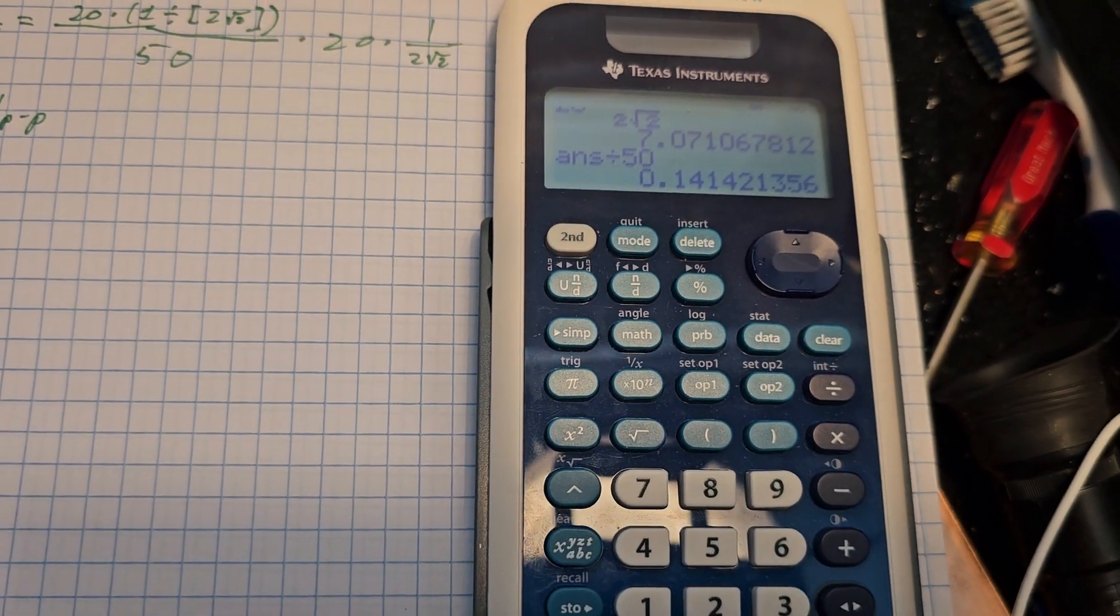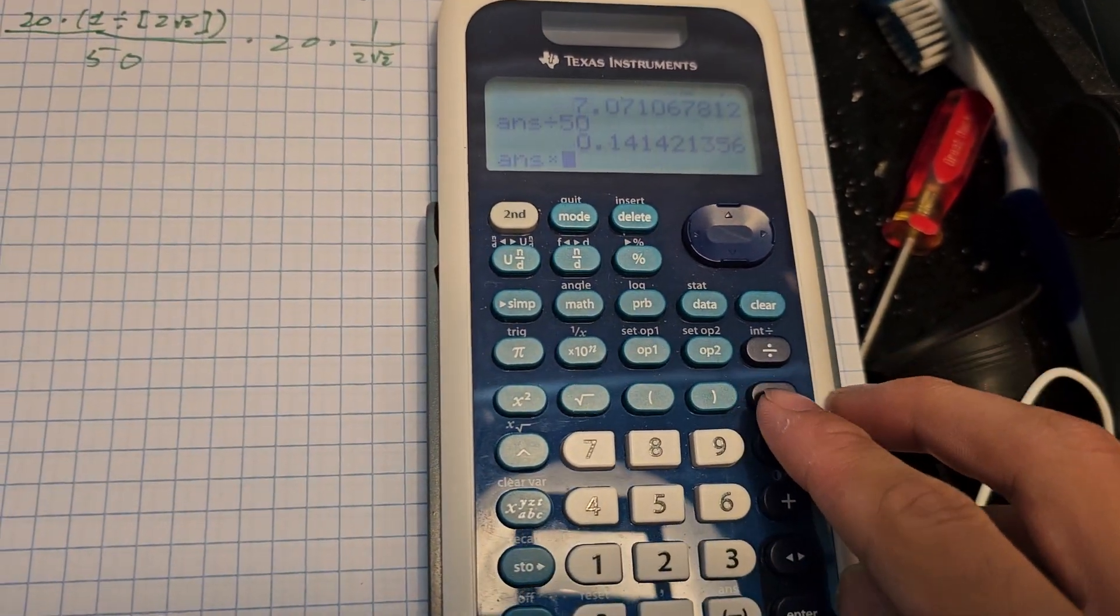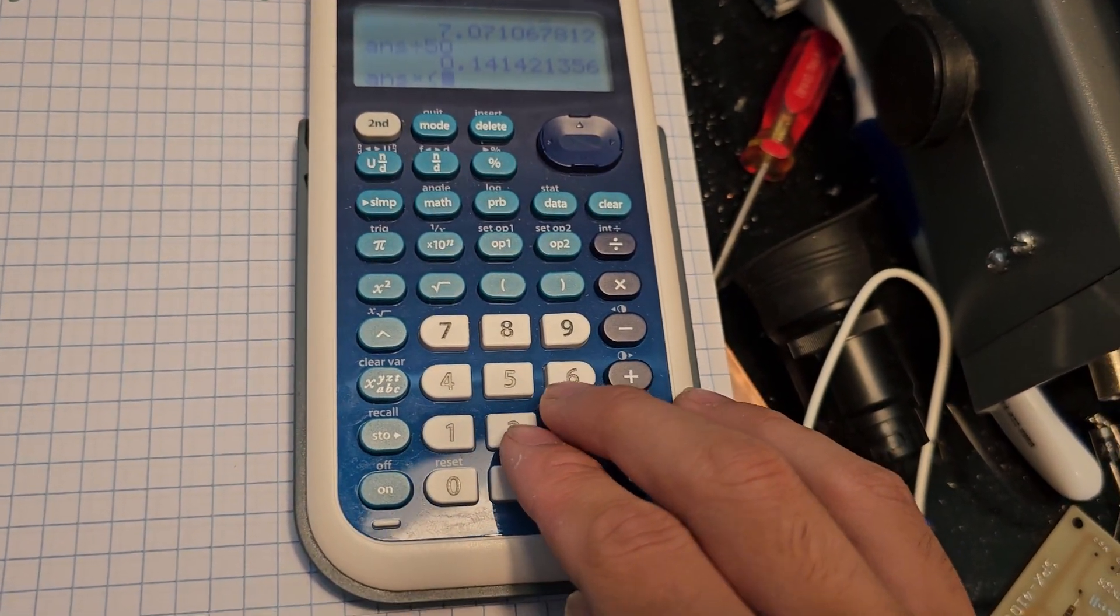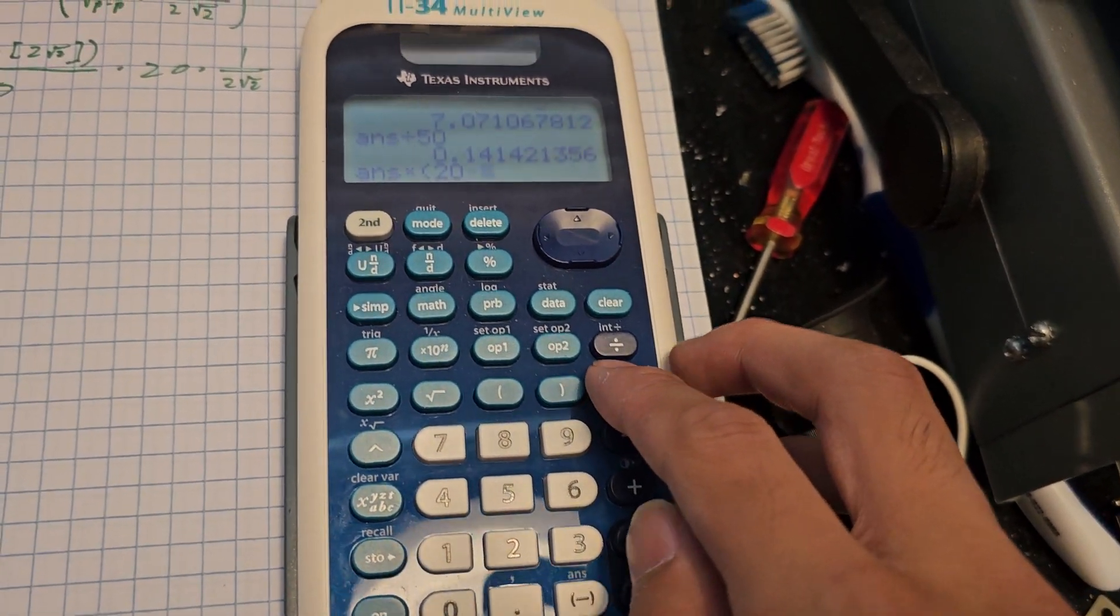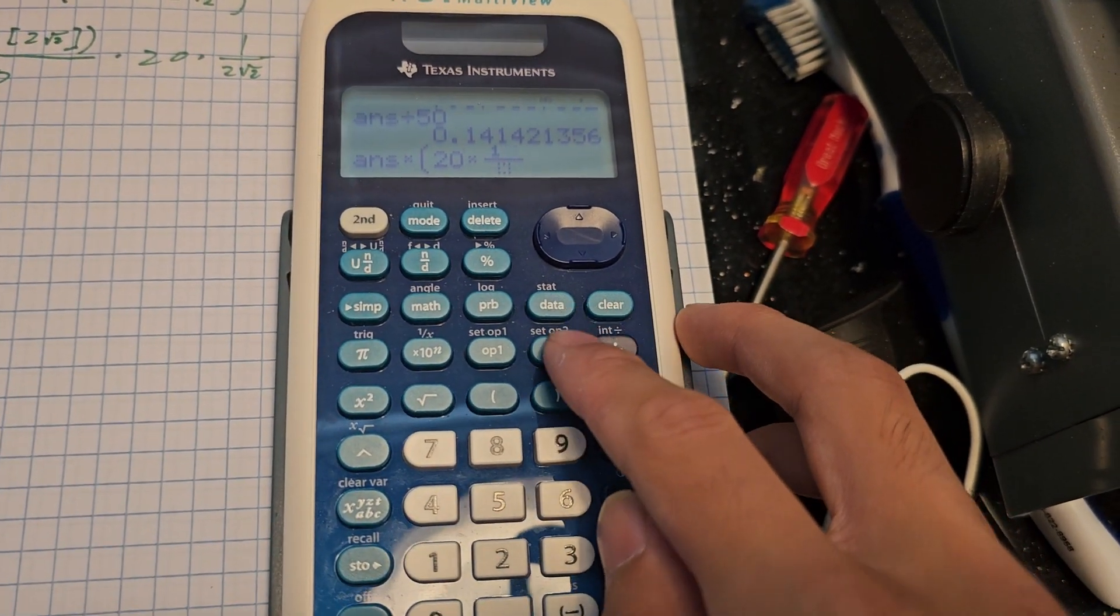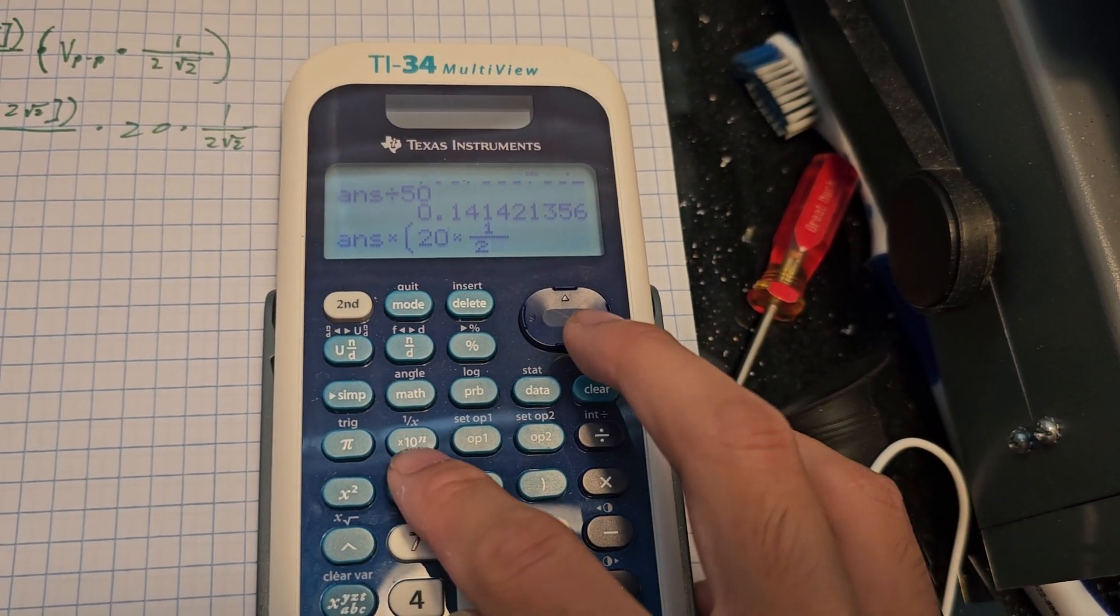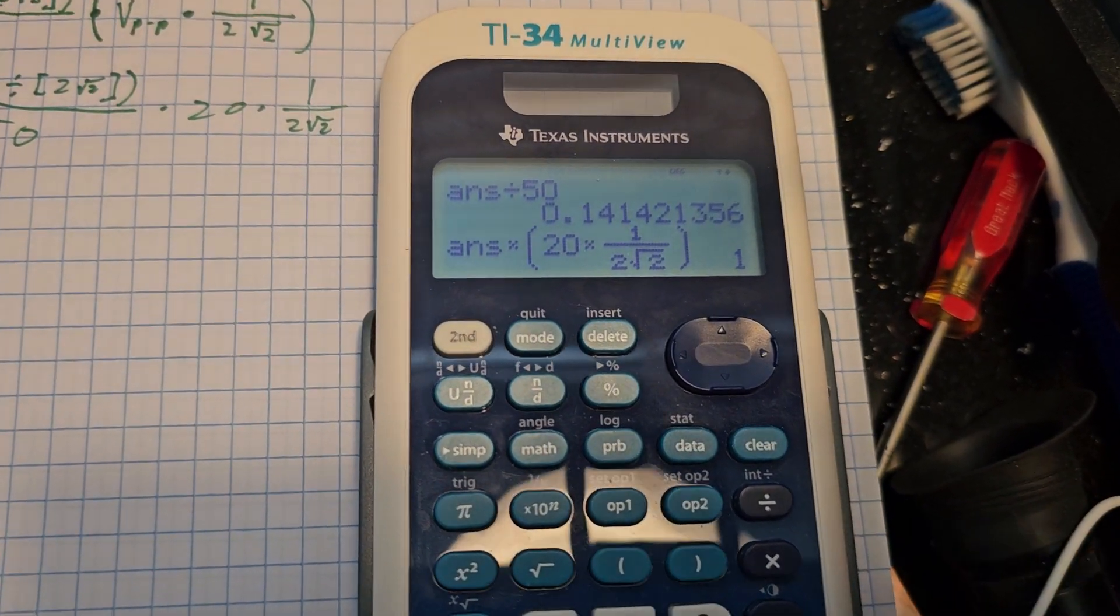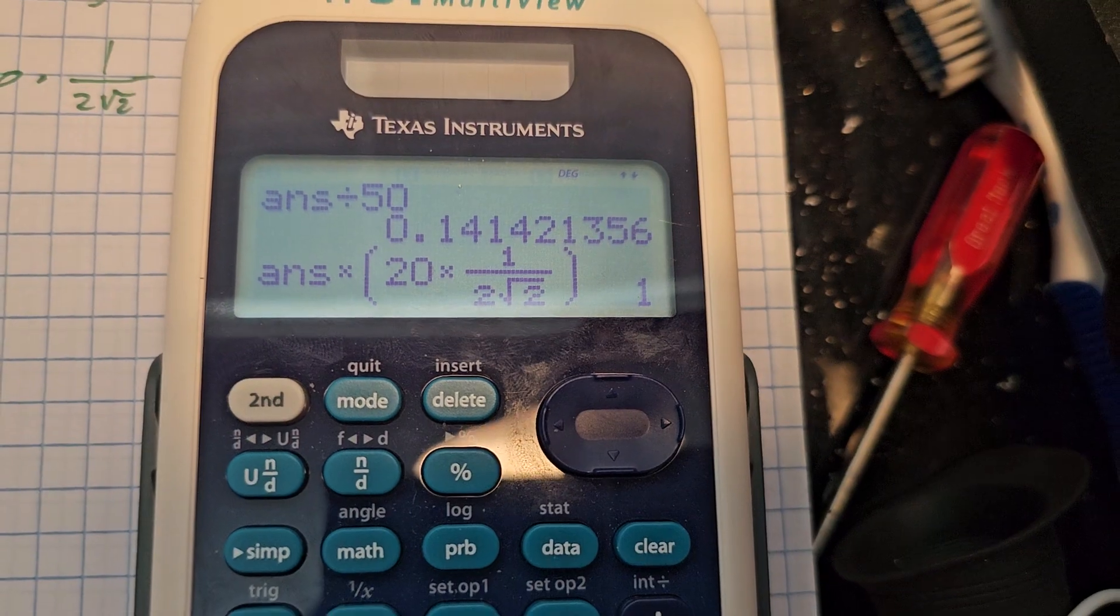Now let's find the wattage. We just multiply that by our RMS voltage, so that's going to be 20 times 1 over 2 square root of 2, and we get 1 watt of power.